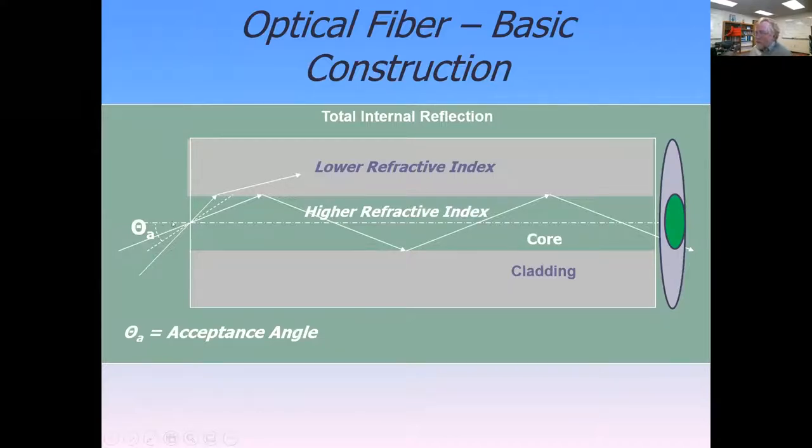Scott explains how optical fiber works through total internal reflection. The core has higher refractive index and cladding has lower refractive index. When light enters at a shallow angle, it refracts back into the core at the interface, bouncing down the fiber like a light pipe. This efficient transmission means minimal energy loss, which is why optical fibers can transmit signals across great distances, even from here to Europe.